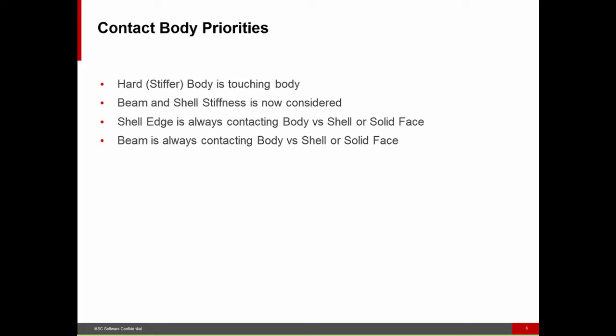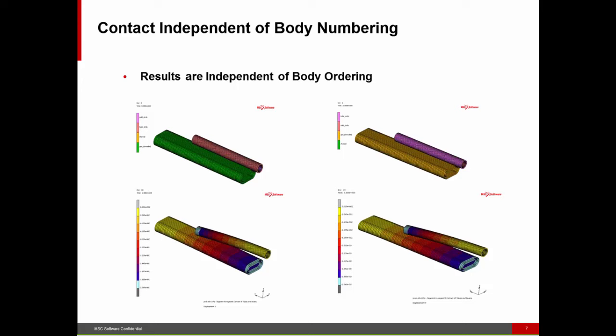We also have smarter logic having to do with stiffer bodies versus softer bodies. When a beam touches either a shell or a solid, the beam is always the touching body. When a shell touches a solid, the shell is always the touching body. So we have additional intelligence in the algorithm.